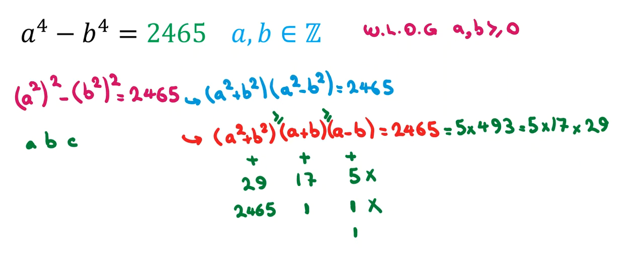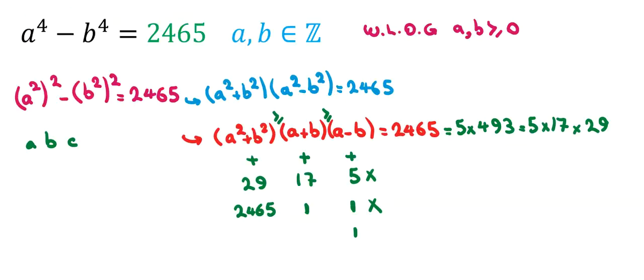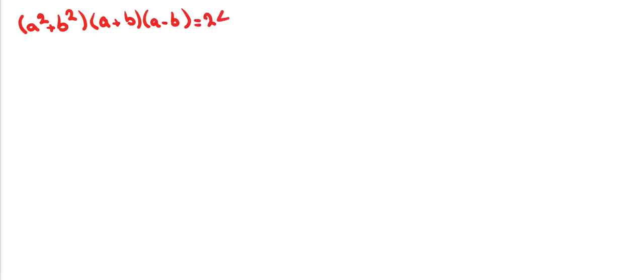Now we consider the case that a minus b is 1. So let's rewrite it in the next page: a squared plus b squared times a plus b times a minus b equal to 2465, which is 5 times 17 times 29. Now we consider a minus b is 1, and we should consider all other cases. So it is 1, it is 17 times 29. It is 1, it is 17, it is 5 times 29. It is 1, it is 29, it is 5 times 17.